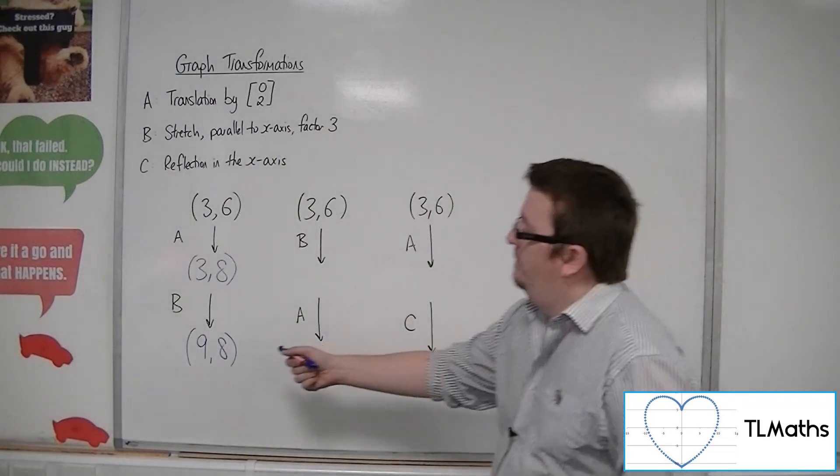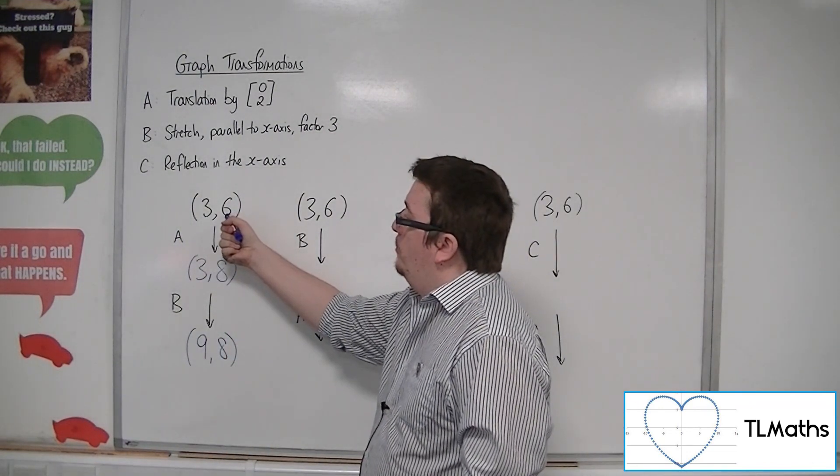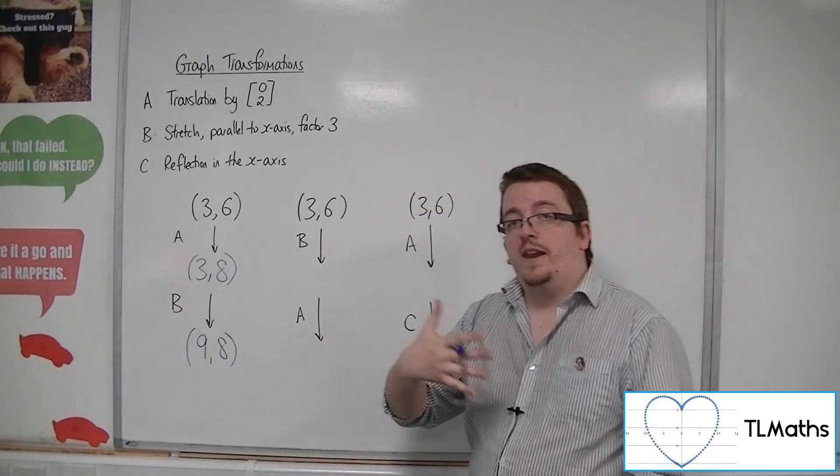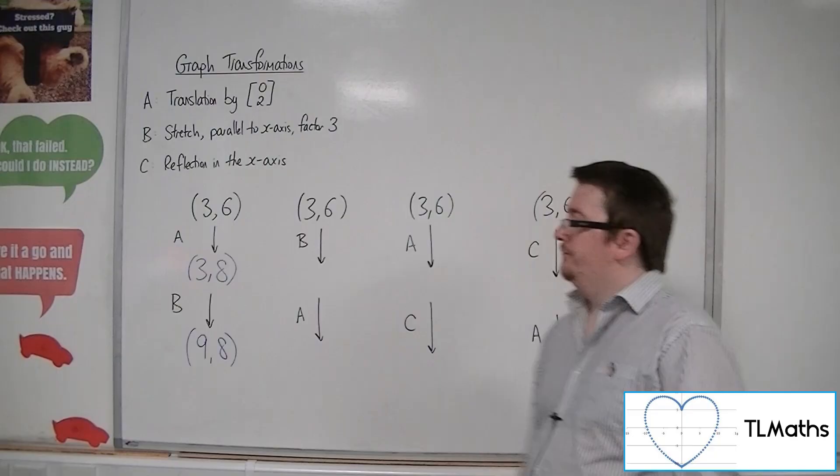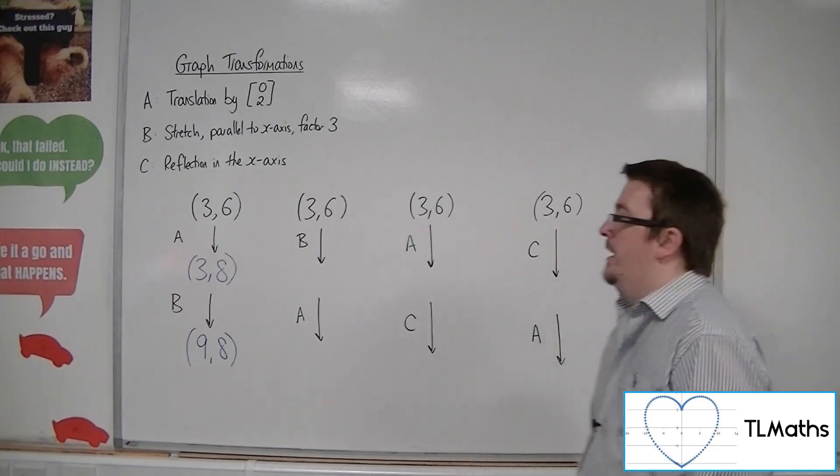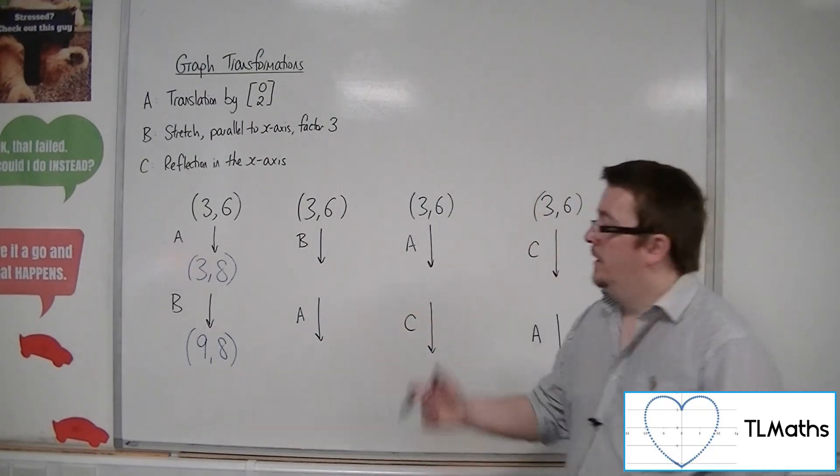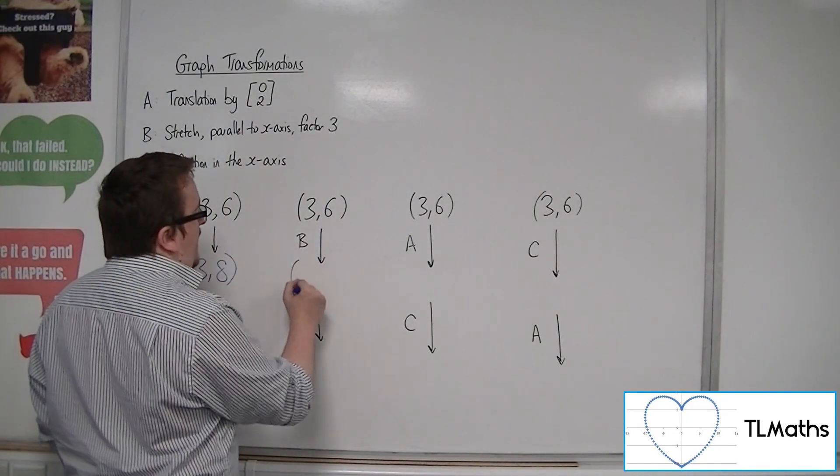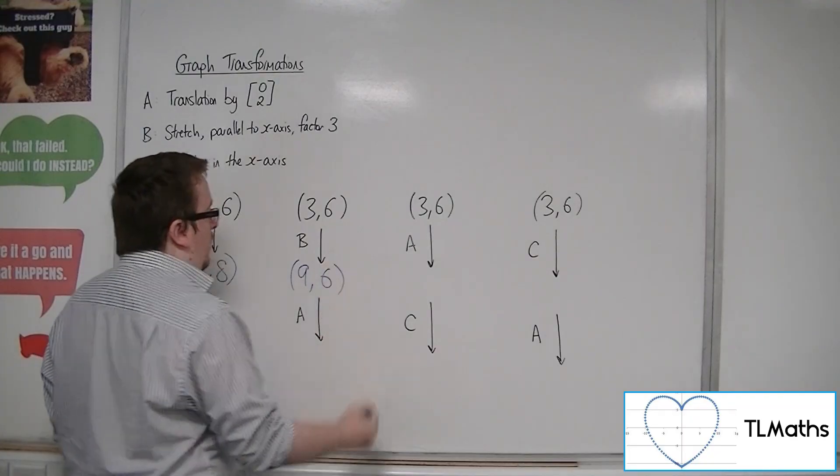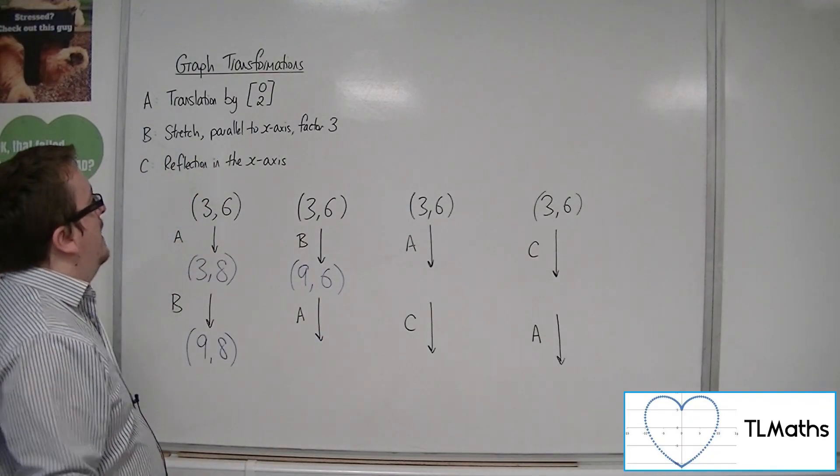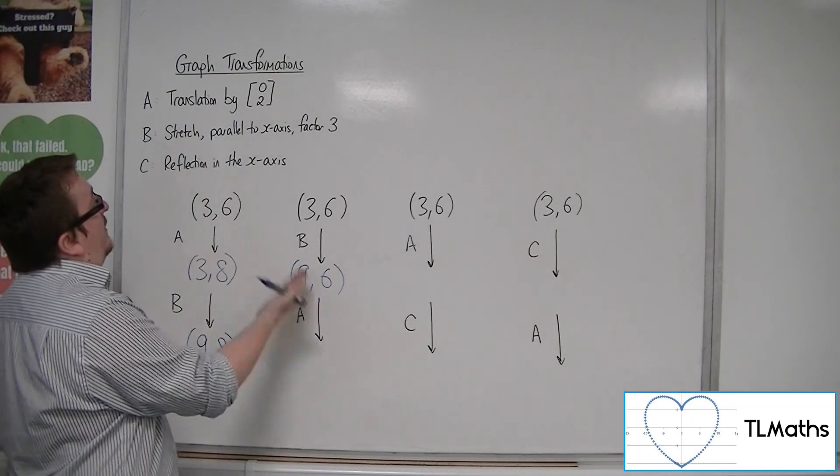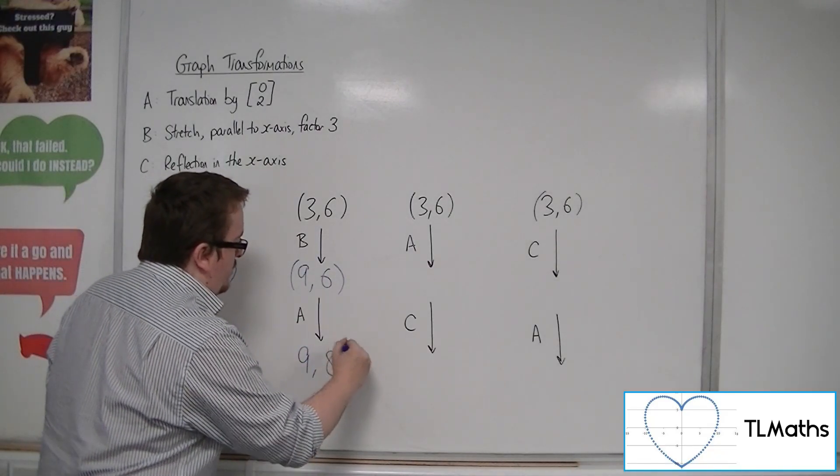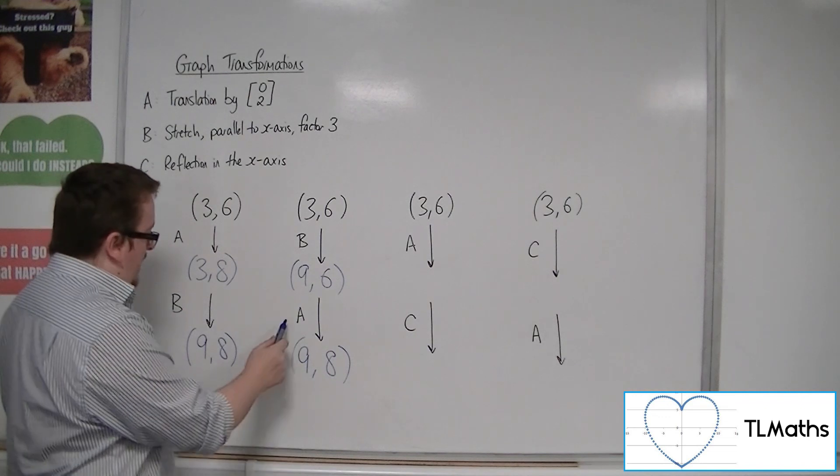So, that is where the coordinates of the point (3, 6) get transformed to once you've done A, then B. How about then, B, then A? So, if I perform the stretch first, the x-coordinate will get multiplied by 3, the y-coordinate will stay the same. And then, if I perform the translation by the vector (0, 2), that point will be moved two units up.